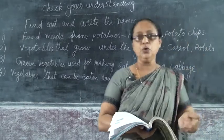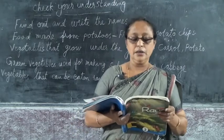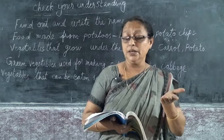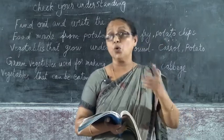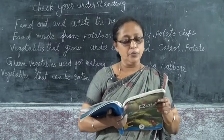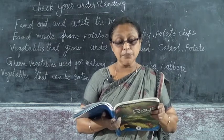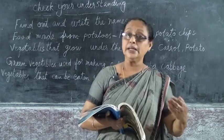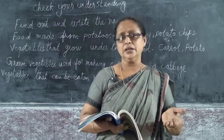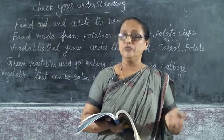I am going to read what is on the board. Food made from potatoes — that is french fry and potato chips. When you are listening to me, miss has told you to write two, so you can write two. Next: vegetable that grows underground. You can write any — ginger, carrot, sweet potato, potato — anything you wish you can write.